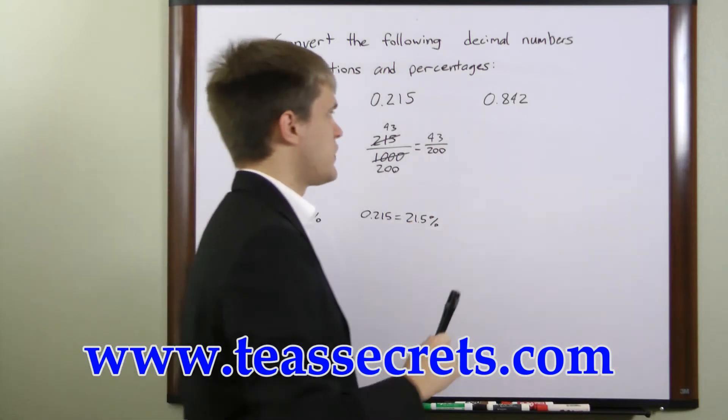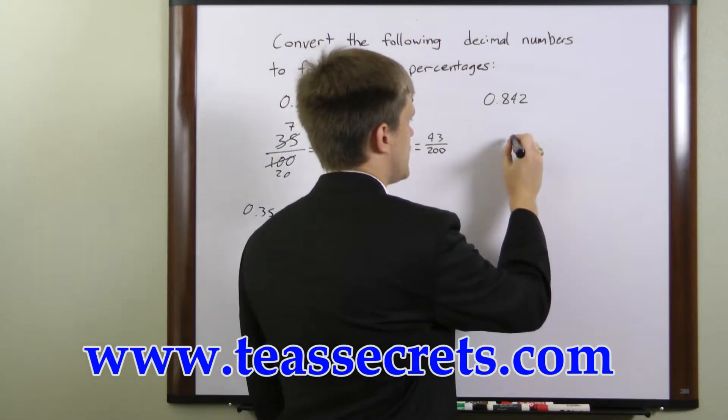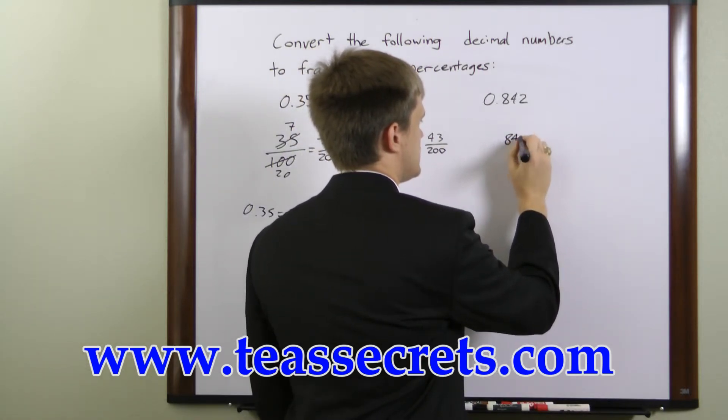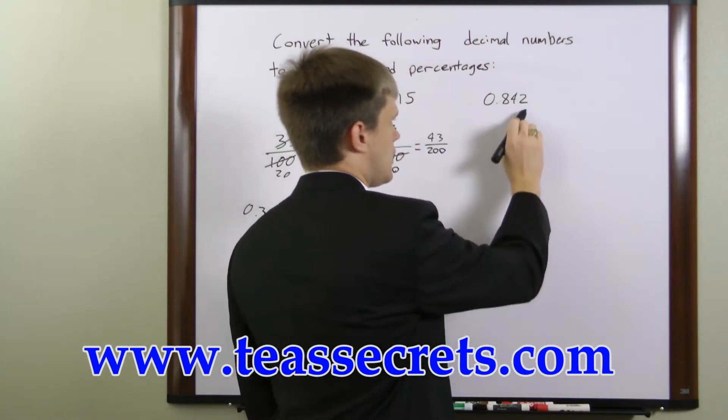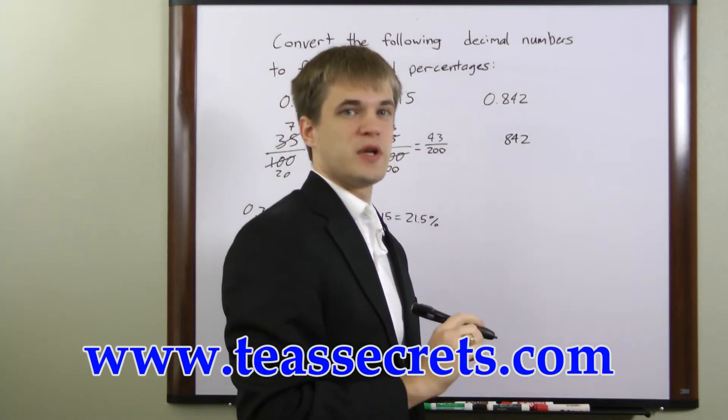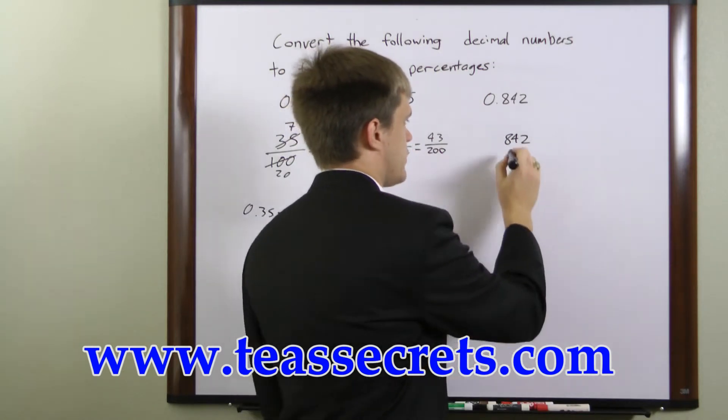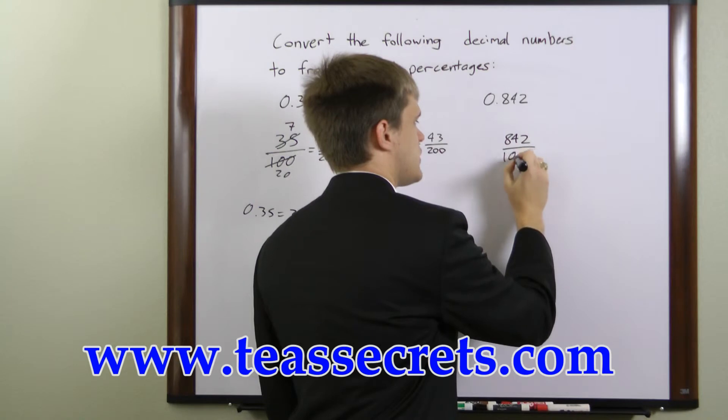In this final example we have 0.842. We will once again write these digits as our numerator. The rightmost digit is 3 places to the right of the decimal, so we will once again have three zeros in our denominator.